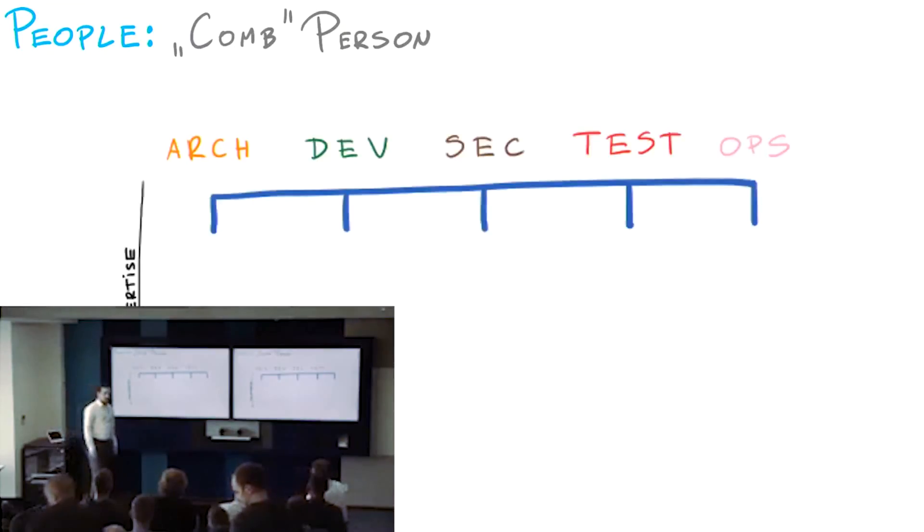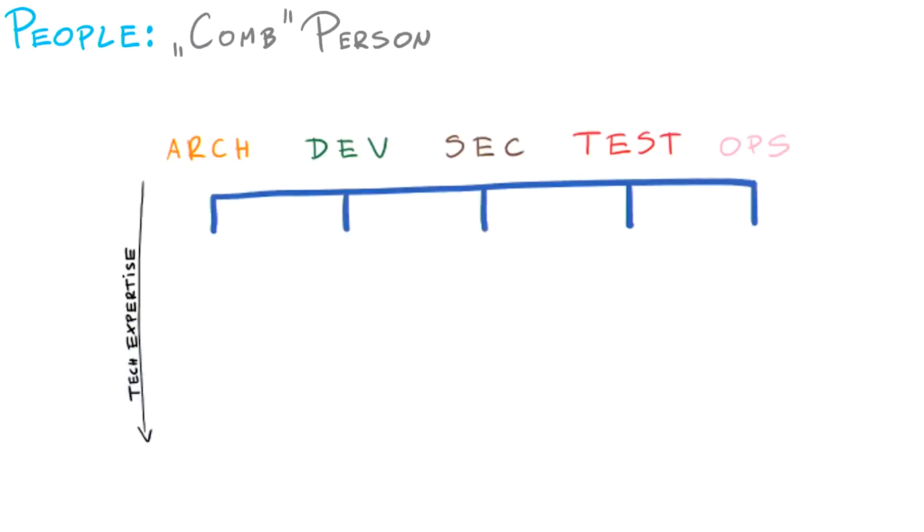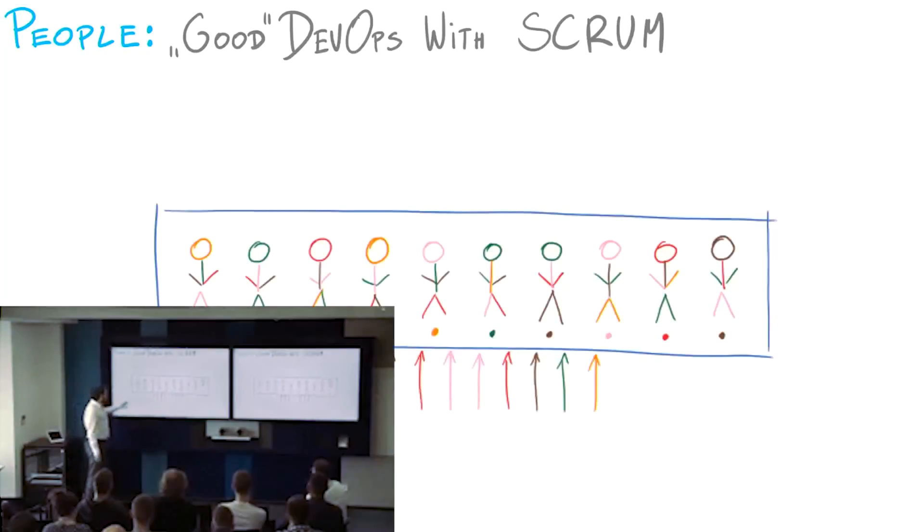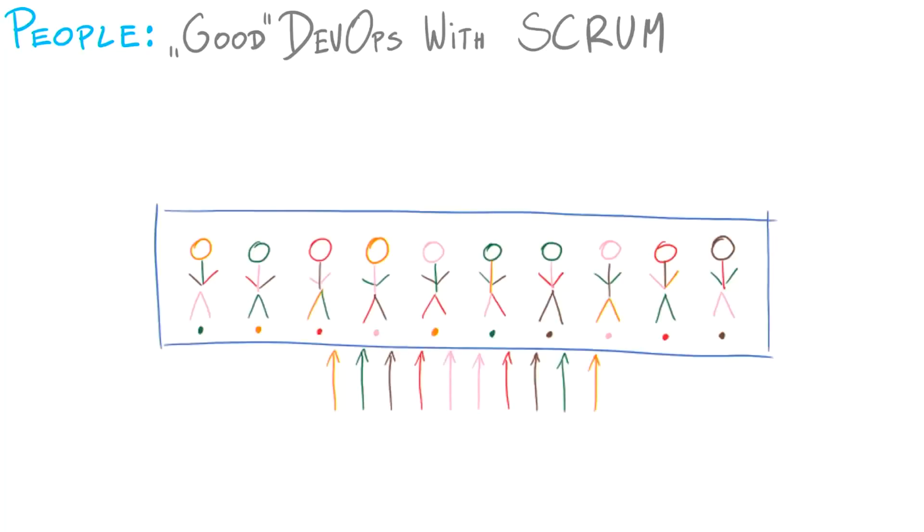The future of the job market looks like this, and this is already happening. The next 10 years will look like this. We're looking for comb people. You are not becoming expert in this model in anything. You just go as deep as you can in all of the areas. These people fit perfectly into this model where you have DevOps with Scrum where the team owns stuff, and these people are able to take any kind of tasks from this whole value stream.